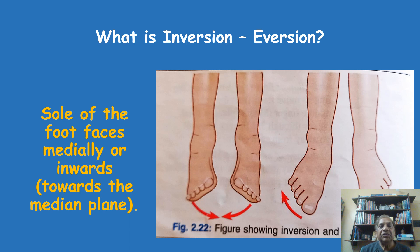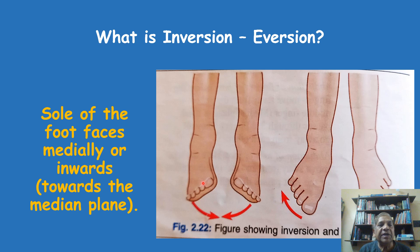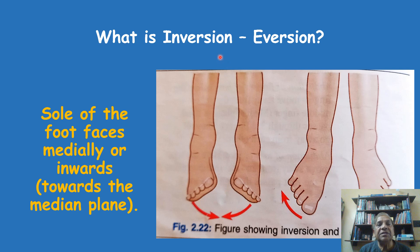Let us look at inversion and eversion movement. If you see what is the inversion movement, as it is shown in the first diagram here, this is in relation to the sole of the foot, where the sole of the foot is facing towards the medial side or towards the median plane. See where the pointer is moving — this is the median plane between the two feet and the two legs. And this is your sole when you are raising the medial border of the sole.